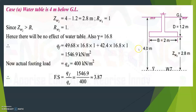ZW2 is the distance from the base of the foundation to the water table. Since the water table is 4 meters below ground level and the foundation depth is 1.2 meters, ZW2 equals 4 minus 1.2, which is 2.8 meters. ZW1 is the distance from the ground level to the water table, measured within the foundation depth zone.